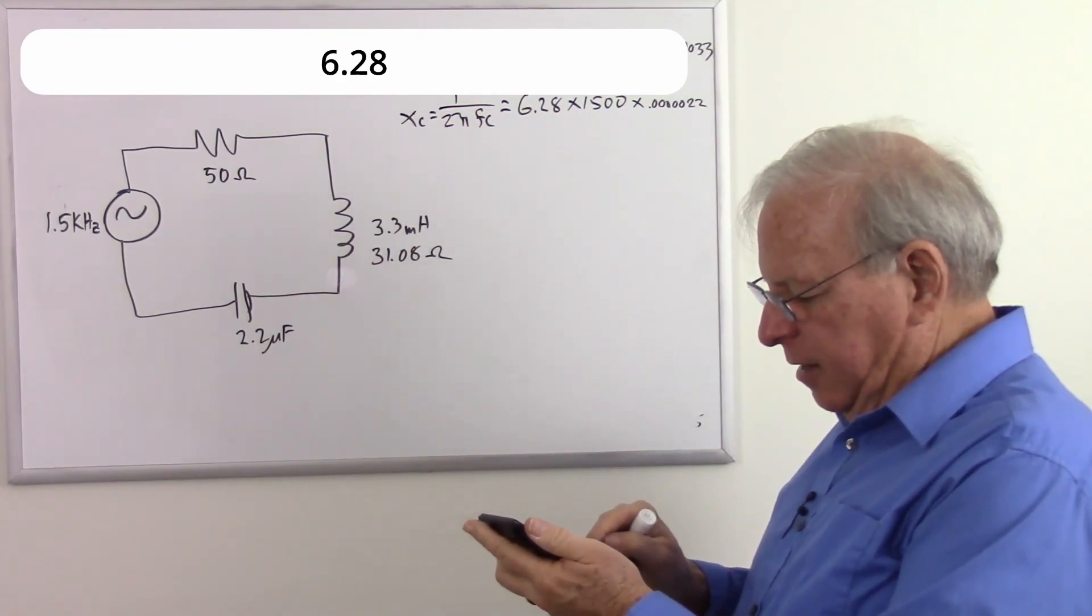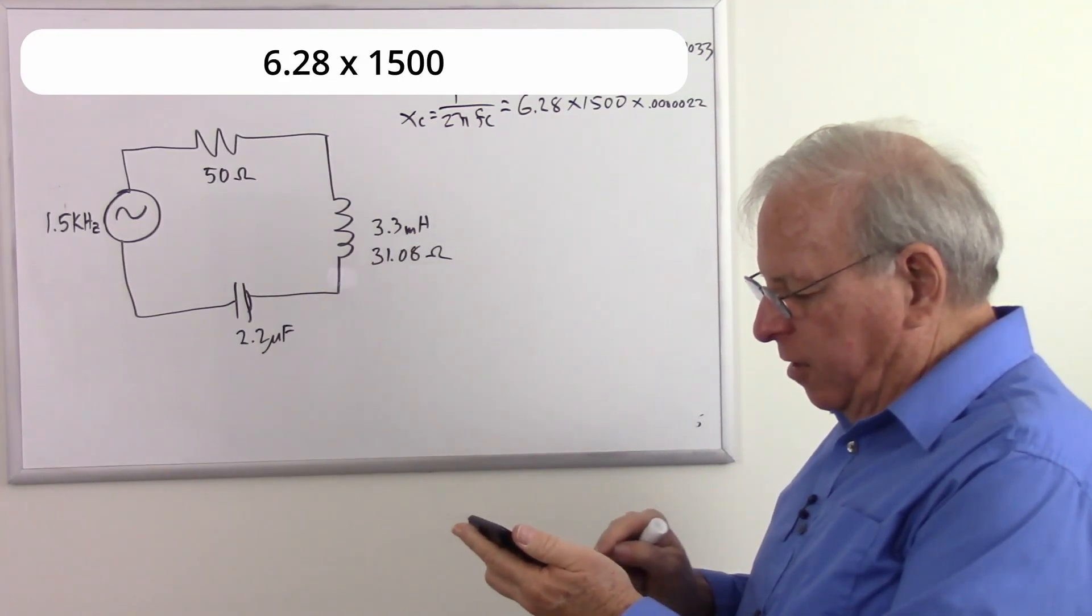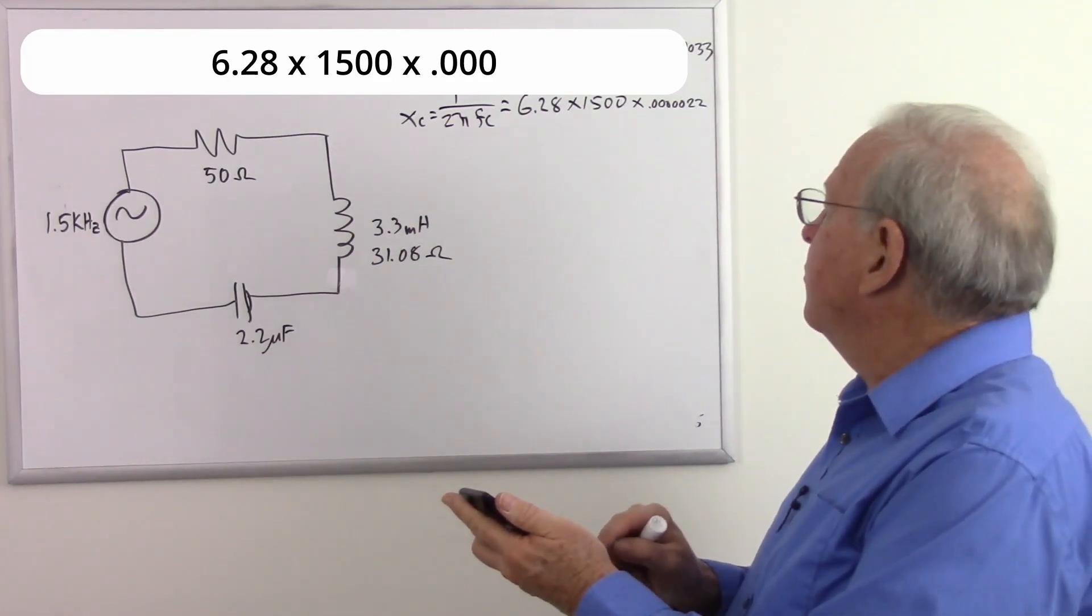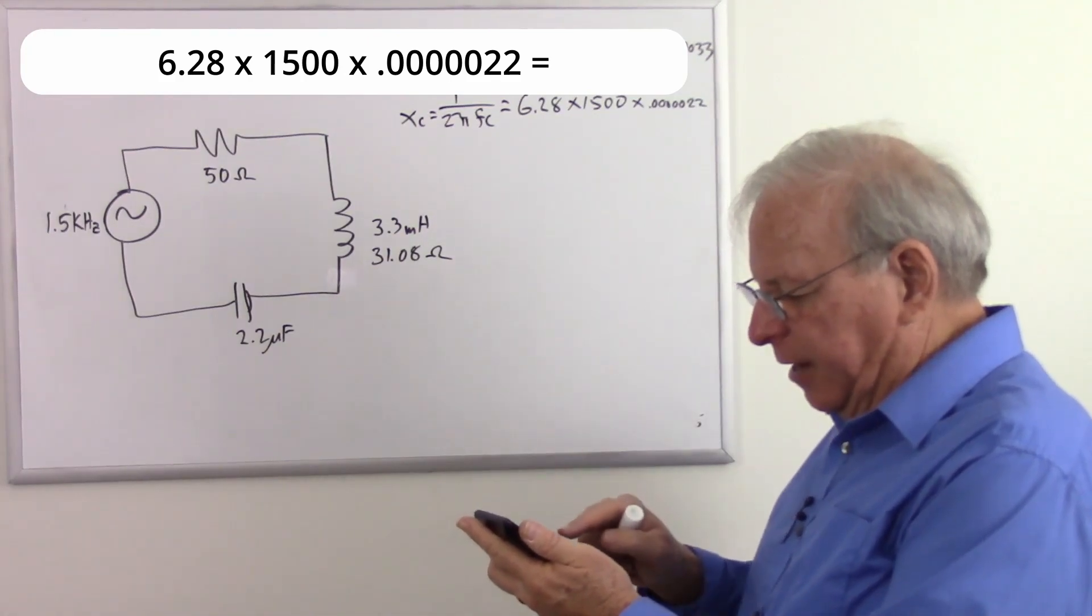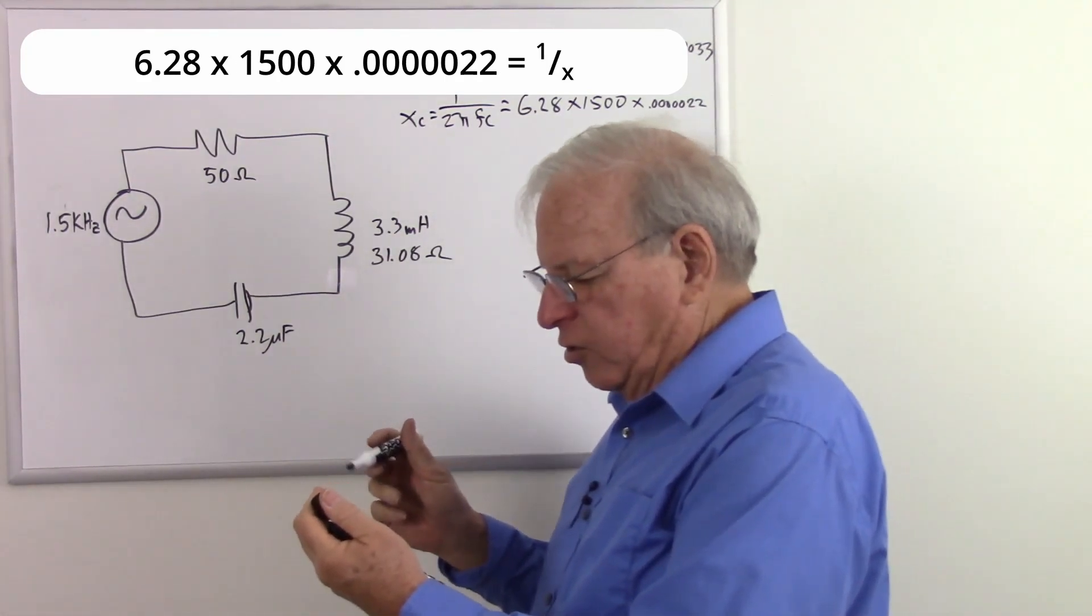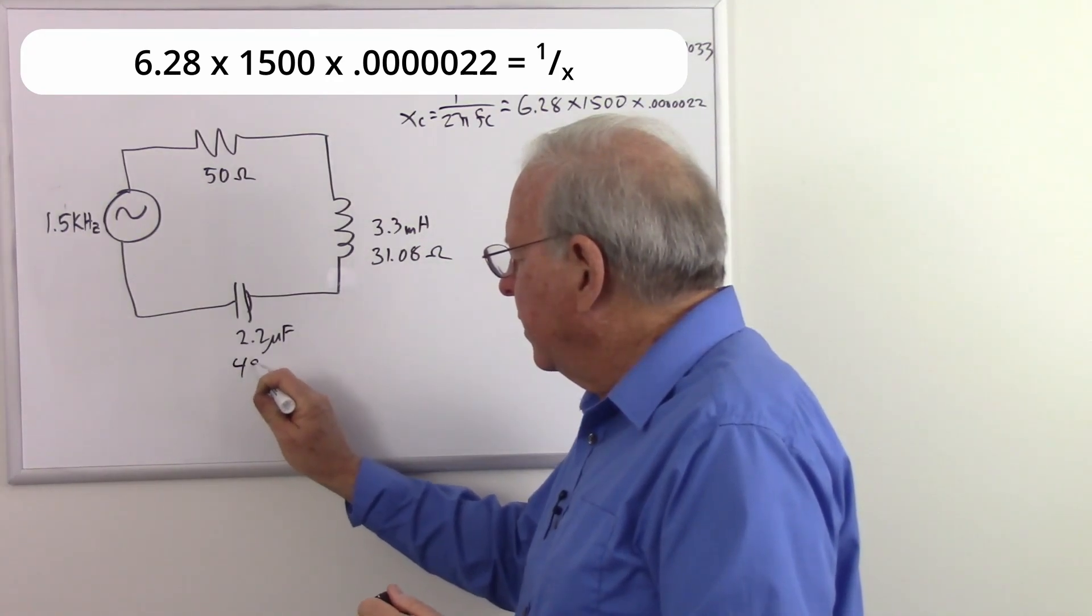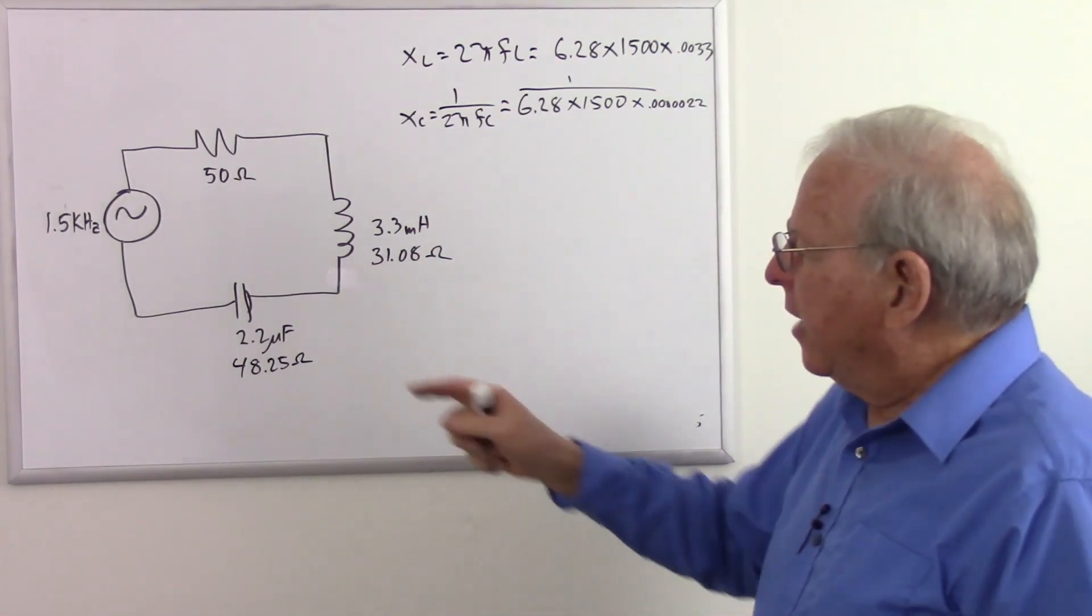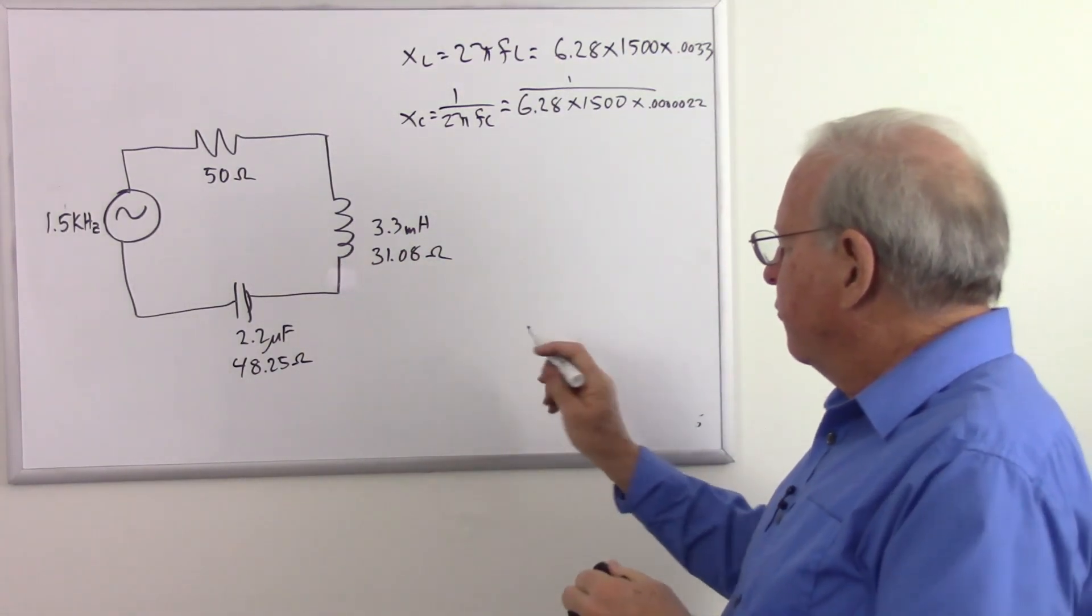6.28 times 1,500 times 0.000022 equals, don't care about that number, just going to take the reciprocal, and I got 48.25. So there we are at 1,500 kilohertz.